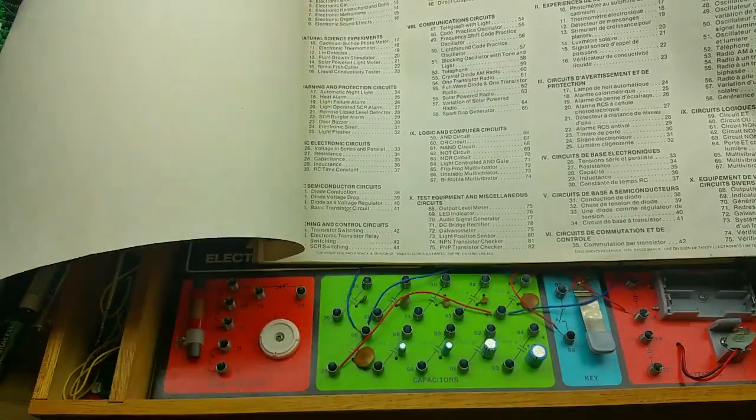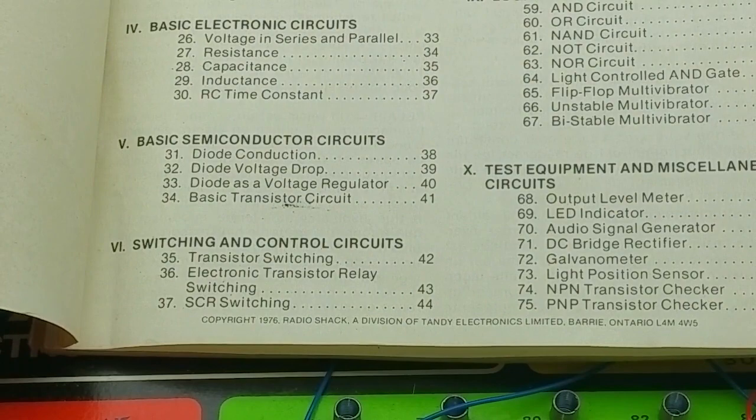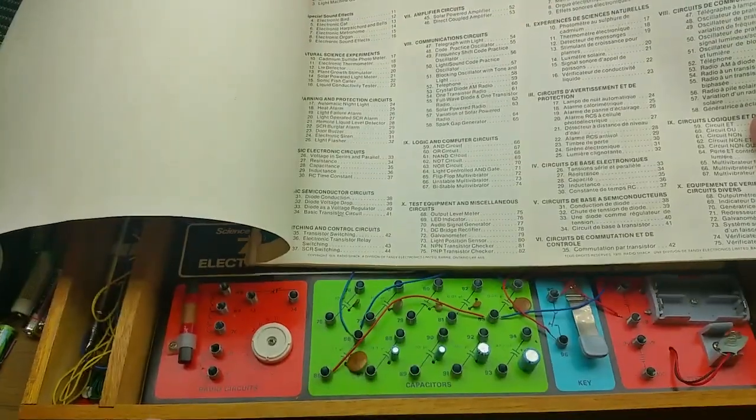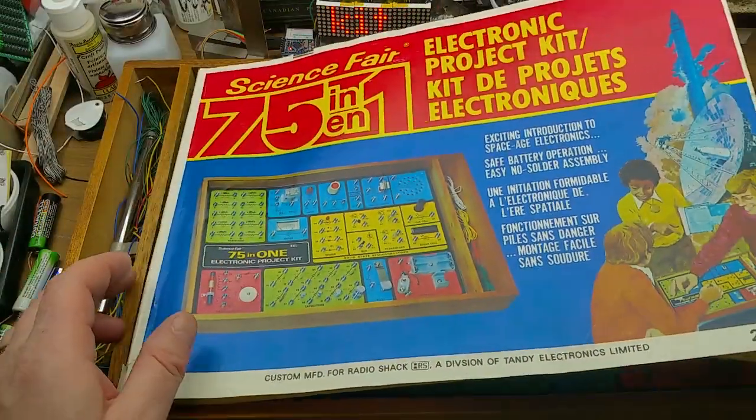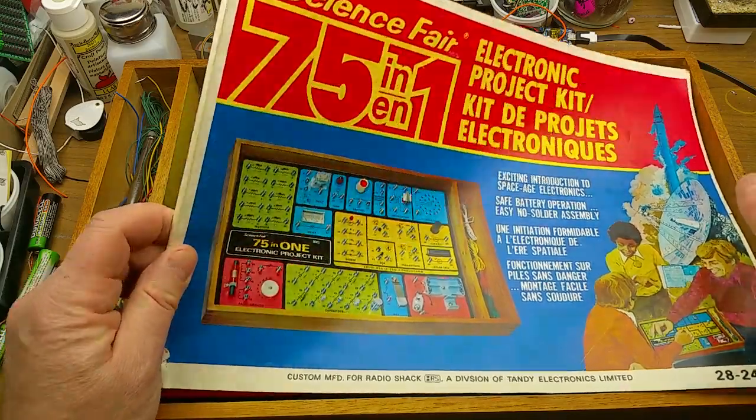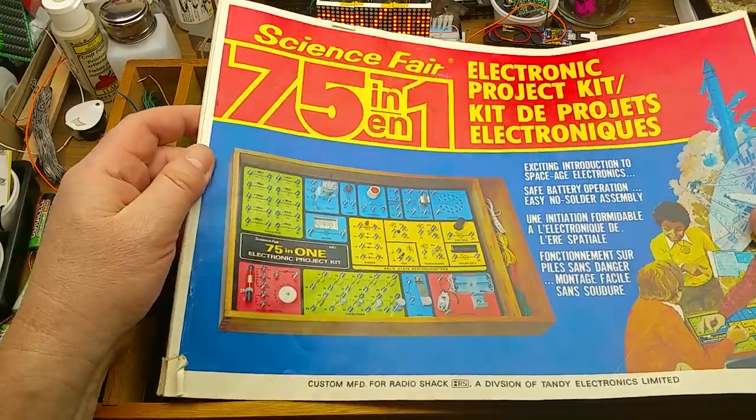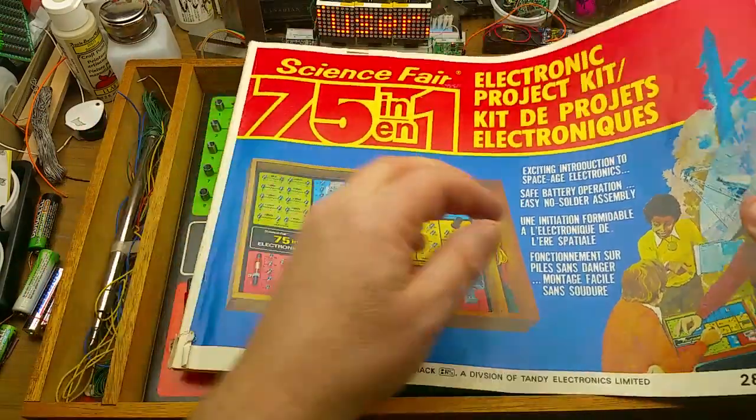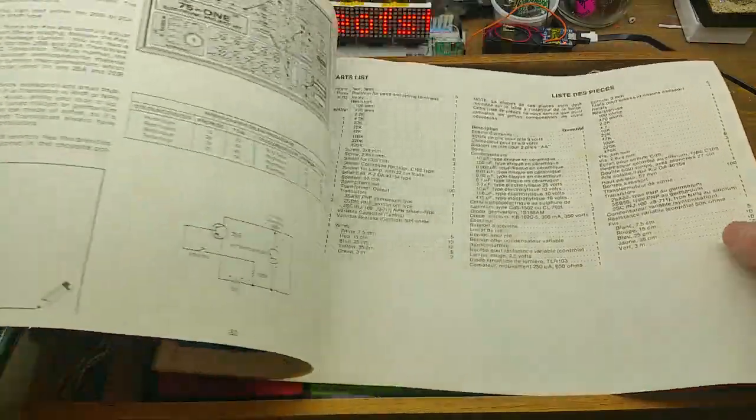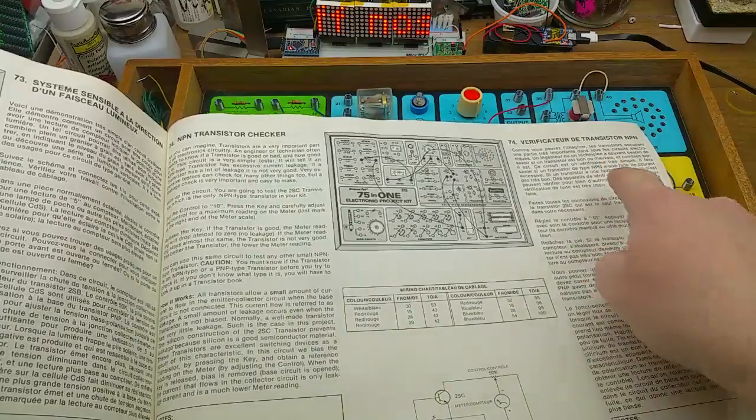Copyright 1976 Radio Shack. This one, because I'm in Canada, has the copyrights of Canadian Radio Shack which was Tandy Electronics Limited of Barrie, Ontario. That ceased to exist a long time before the American Radio Shacks died, which just happened in the last year or so. Anyway, 75-in-1 Electronic Project Kit.